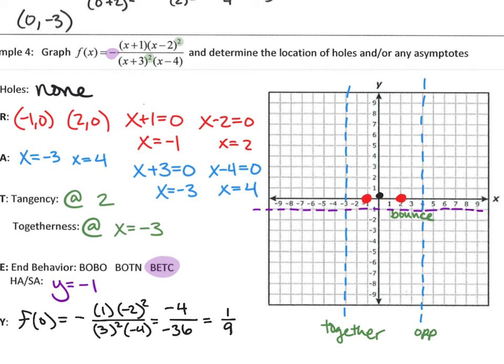Which section has the most information? The little middle section. So we start there and play connect the dots. At x equal to 2, I bounce — the graph bounces right back up. Since the vertical asymptote at negative 3 says 'opposite' underneath it, I start the next piece down at the bottom. You get close to but never touch the horizontal asymptote at negative 1.